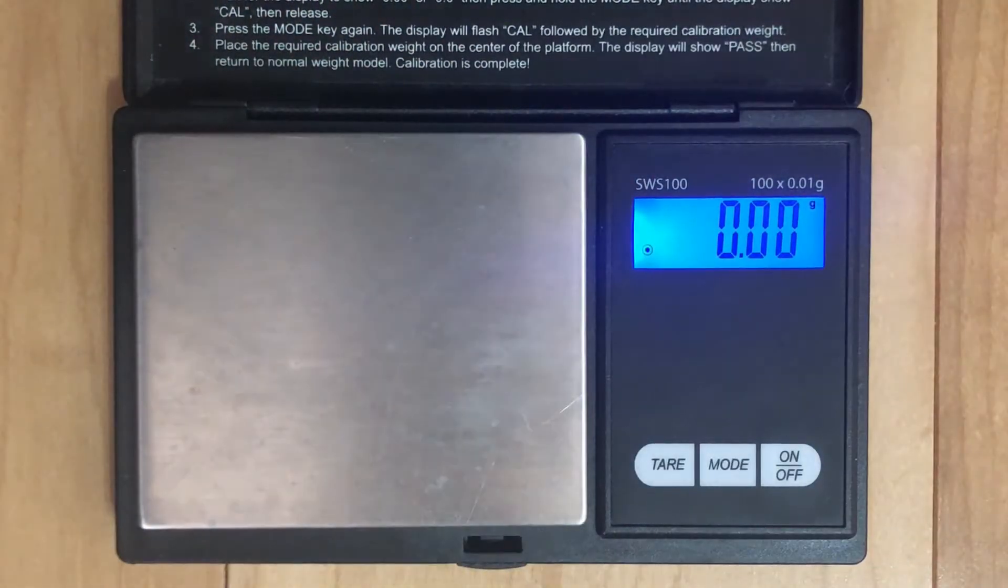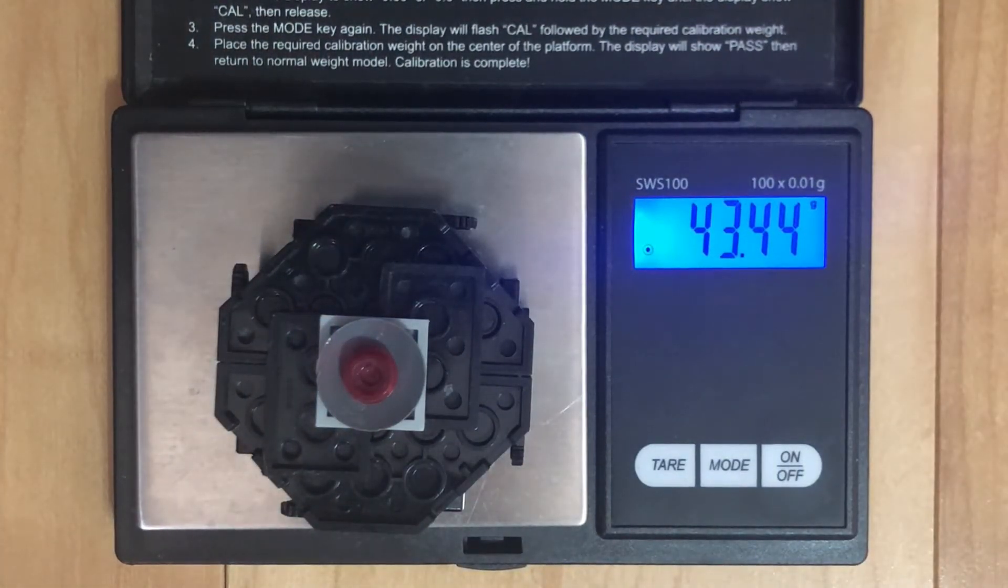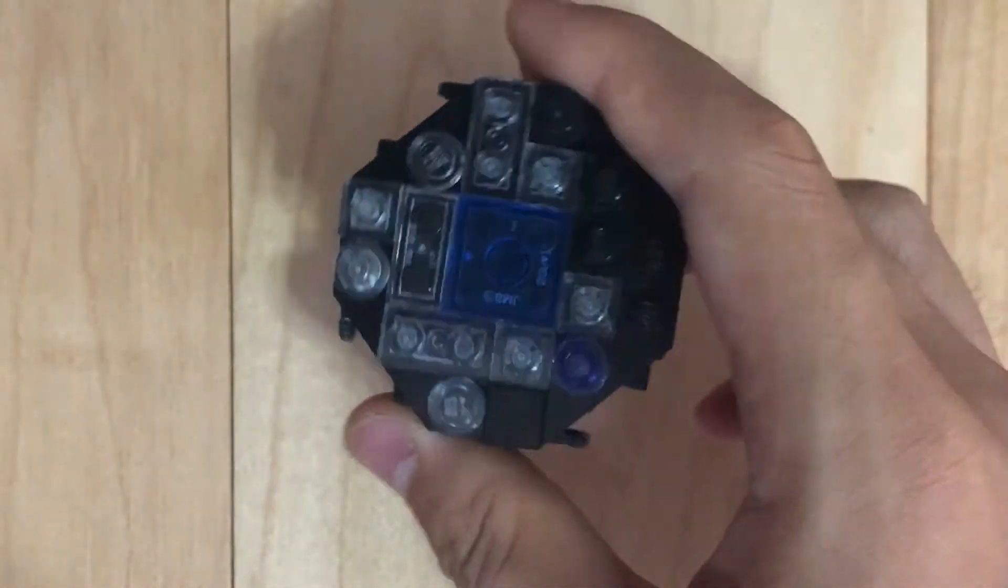All together, LEGO Doom Sizer weighs 43.44 grams. It's time to tape it up and do some test battles.